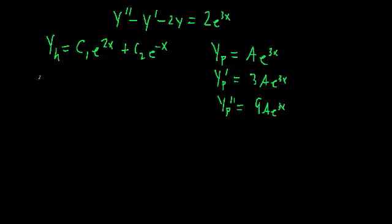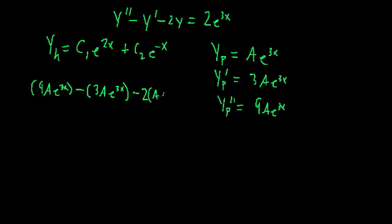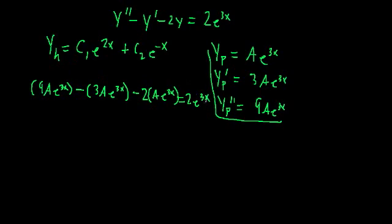Plugging all these in, we get: the second derivative 9Ae^(3x), minus the first derivative 3Ae^(3x), minus 2 times y which is 2Ae^(3x), all equal to 2e^(3x). Notice every term has e^(3x), so let's divide both sides by e^(3x).